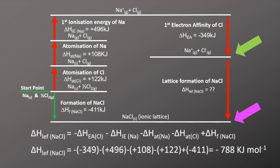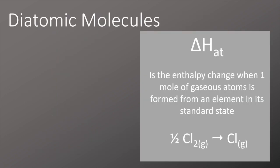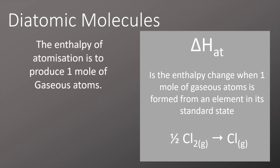So you might well have noticed that whenever we put a diatomic molecule in there, such as chlorine Cl₂, we always put a half in front of it. And that's because the enthalpy of atomization is to produce one mole of gaseous atoms. The value that we have is usually just to make one mole of the gaseous atoms at the end, so we always put a half in front of that molecule.